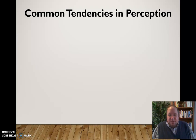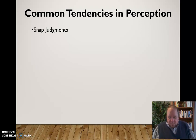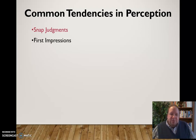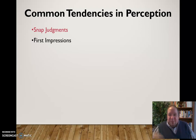Some common tendencies in perception — things we want to be aware of and maybe need to avoid. We want to avoid snap judgments; we're influenced by what we see first and what's most obvious, but we should reserve judgment as much as possible to get the full picture and really take in the full situation before making any true judgments. We're also heavily influenced by first impressions, which tend to linger — if you meet somebody and they're a jerk at first, that's going to take a long time to get over even if they're really nice to you beyond that.